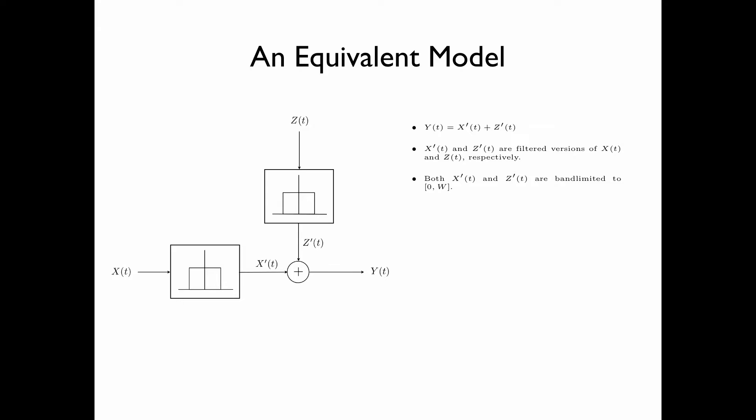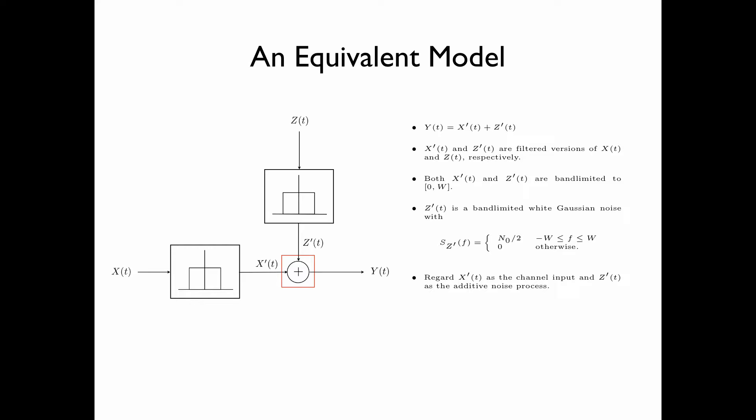Both x prime of t and z prime of t are band-limited to the frequency range from 0 to w, and z prime of t is a band-limited white Gaussian noise with power spectral density equal to N_0 over 2 for f from minus w to w, and equal to 0 otherwise. From now on, we are going to regard x prime of t as the channel input and z prime of t as the additive noise process — that is, we regard the red box as the channel, with the constraint that the input process x prime of t is band-limited. Later on, we will see how to impose a suitable power constraint on the input process x prime of t.